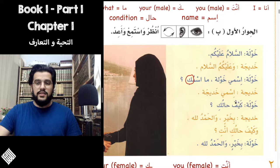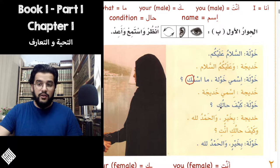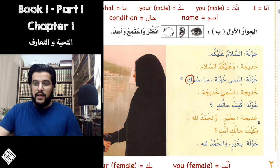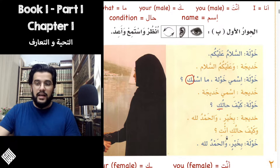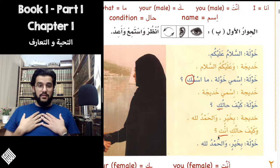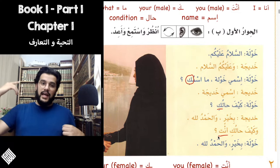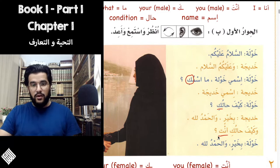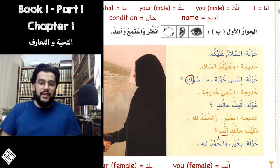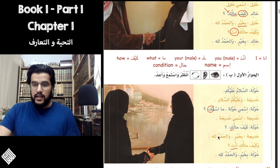Khadija answers Ismi Khadija — my name is Khadija. Kaifahaluki — how are you? Notice the difference between Kaifahaluka and Kaifahaluki: Ka is for male and Ki is for female. Khadija answers Bikhayr, Alhamdulillah, Wa Kaifahaluki, Anti — Bikhayr, Alhamdulillah. Anti is the pronoun 'you' for female. Ana means 'I' regardless of gender, and Anti is 'you' when talking to a female. The dialogue is now very clear, alhamdulillah.